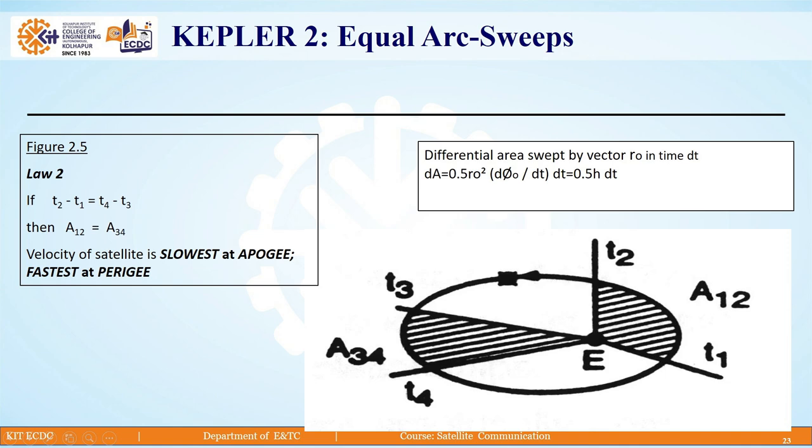If these two times, that is T₂-T₁ and T₄-T₃, are the same, then the area covered within these two times is also the same. So A₁₂ = A₃₄ when T₂-T₁ = T₄-T₃.